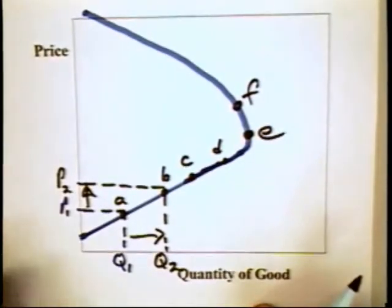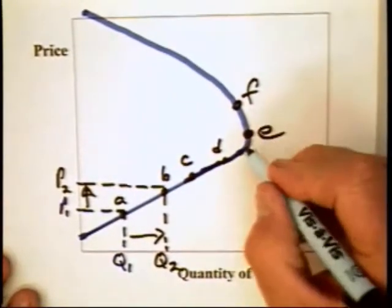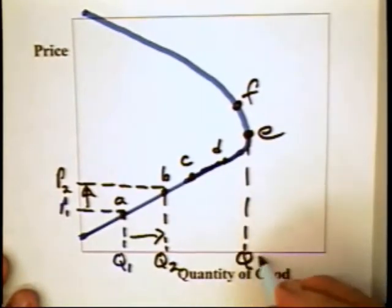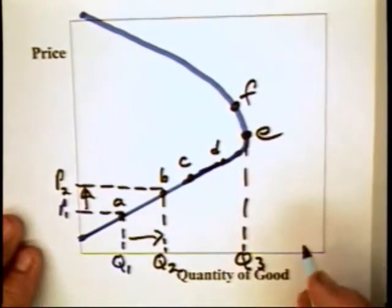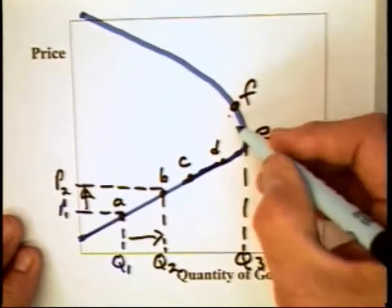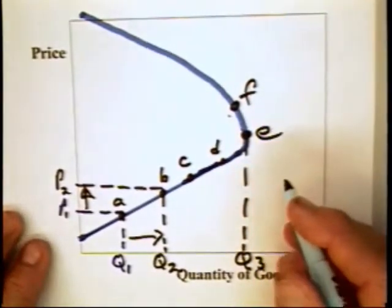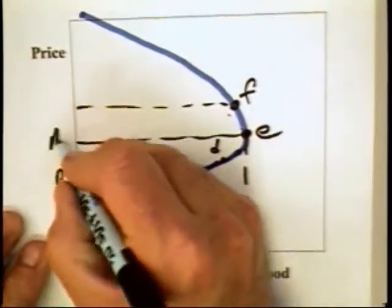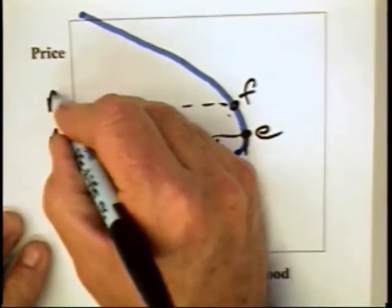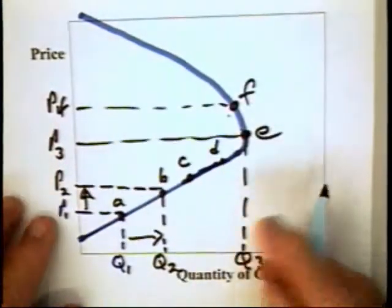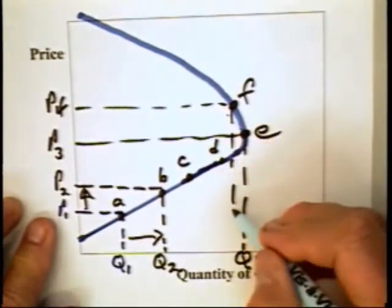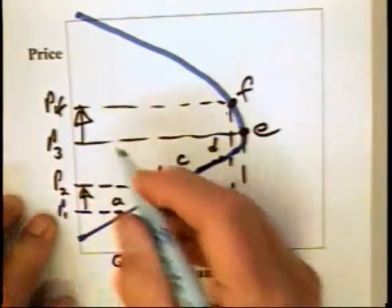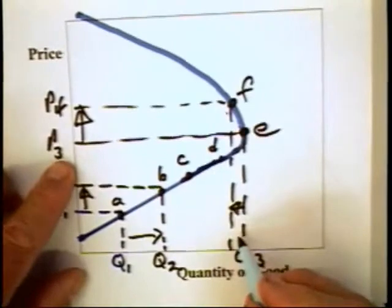We will see that they will not stay at point E or quantity Q3. The answer is simple. As this curve begins to bend backwards, the price increase from P3 to P4 leads to a lower quantity purchased. But the price increase percentage-wise is greater than the reduction in quantity.